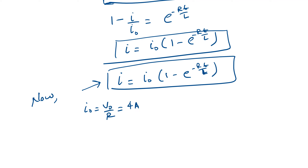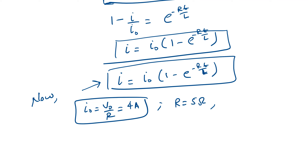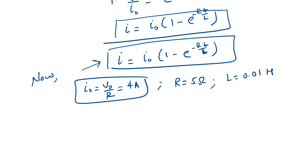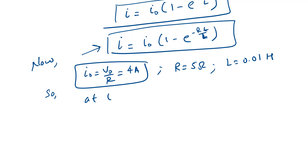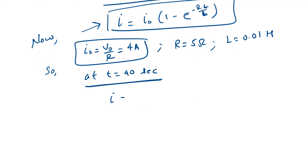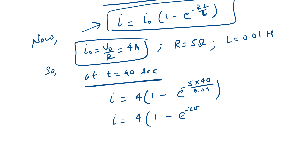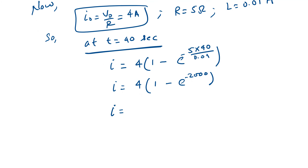In the question, I₀ equals V₀ by R which is 4 amperes, R is 5 ohms, and L is 0.01 henries. We have to find the current at t equals to 40 seconds. So I equals I₀ times (1 minus e to the power minus Rt/L), which gives us 4 times (1 minus e to the power of minus 5 times 40 divided by 0.01). Solving the exponent: minus 2000.